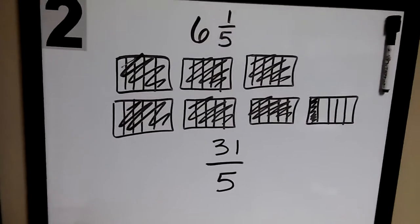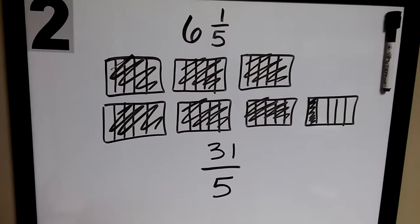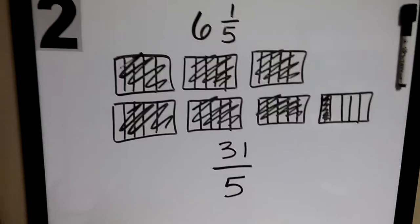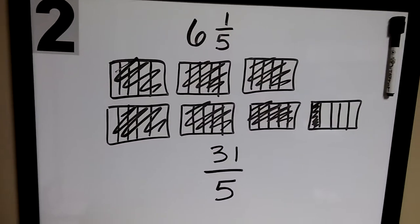So using a model, I've shown that six and one-fifth, written as an improper fraction, is thirty-one fifths.